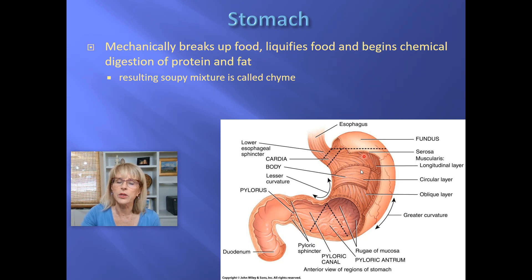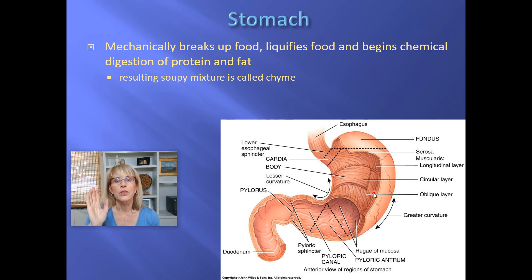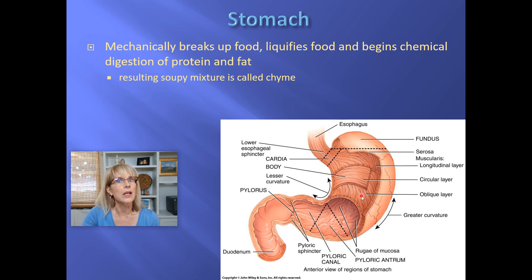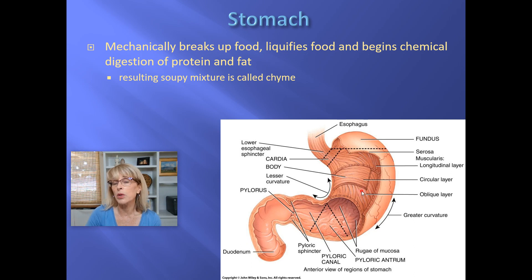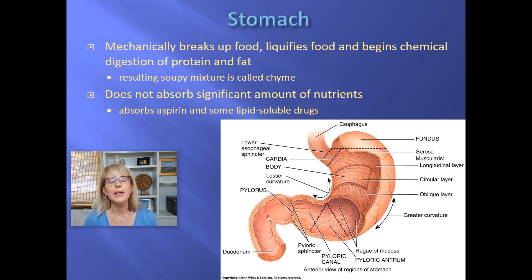The pH of the stomach contents is around two or three — highly acidic. But once bicarbonate is added in the duodenum, the pH rises to about eight or nine. The first thing that happens at that pH is the denaturation of the most dangerous enzyme from the stomach: pepsin. Pepsin loves a pH of two, and from your enzyme studies you know that extremes of pH denature enzymes. So when pepsin hits the pH of eight or nine in the duodenum, it is instantly denatured and becomes just another protein to be digested.